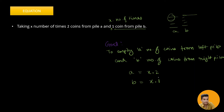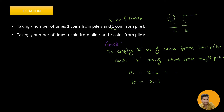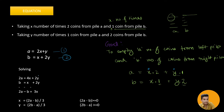The other case: we take y number of times one coin from pile A, and y number of times two coins from pile B. So we have these two equations: 2x + y = A and x + 2y = B, with two variables x and y. If we solve these two equations simultaneously, we arrive at an important result.